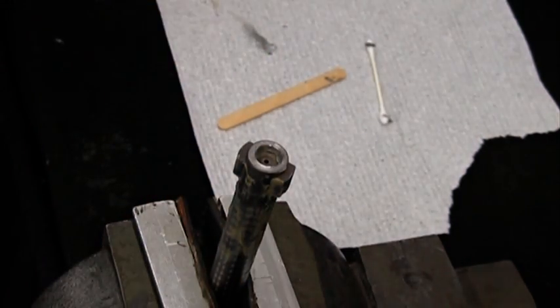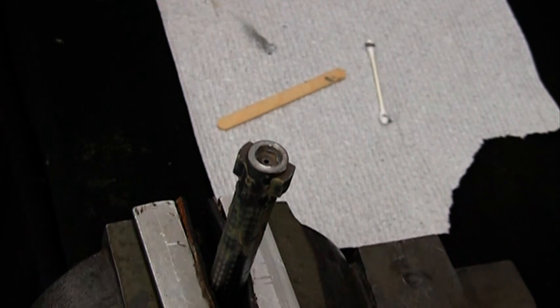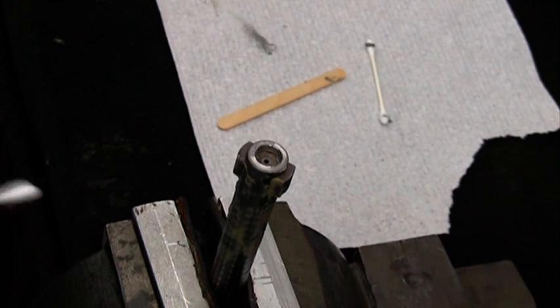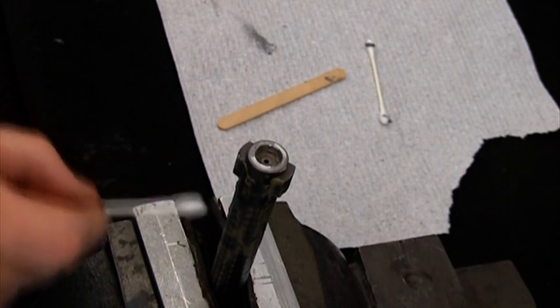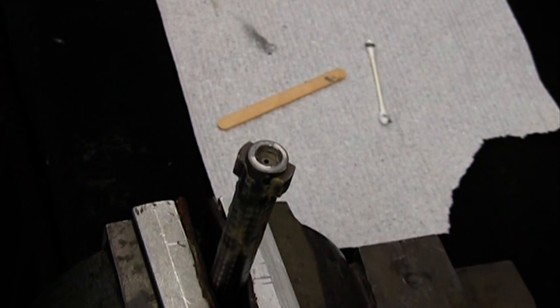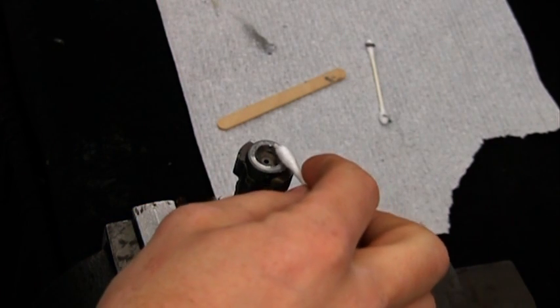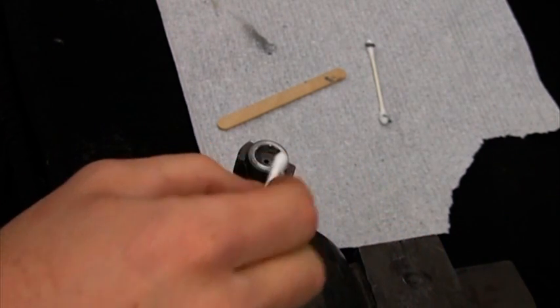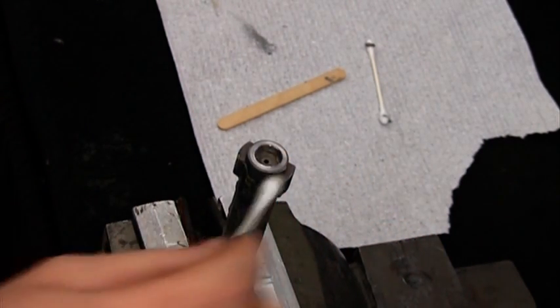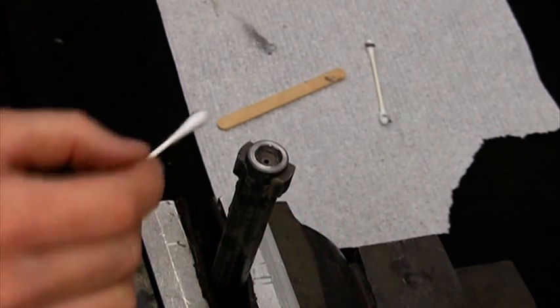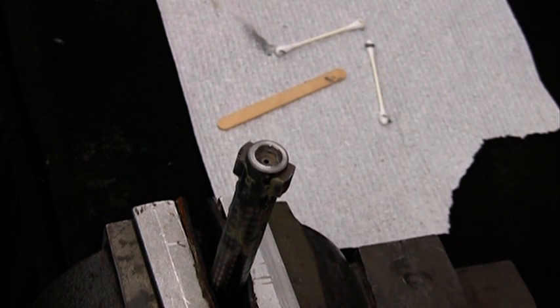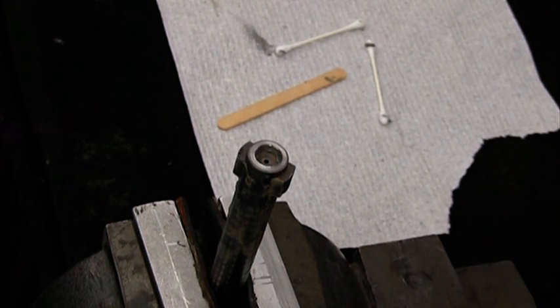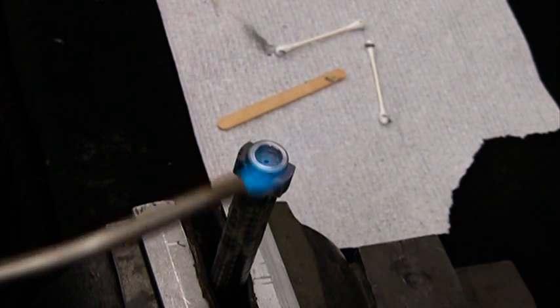I've taken some Brownells heat stop and covered it all over the bolt, especially on the lugs and down the body a little bit. It shouldn't hurt anything with the propane torch to get that hot, but I'm not taking any chances. I don't want heat anywhere that I don't want it. We're going to go ahead with just a regular propane torch and heat this up.